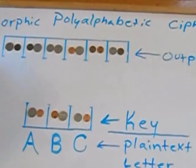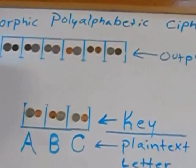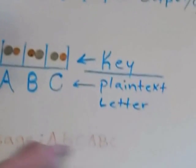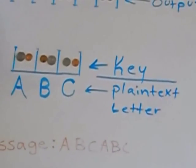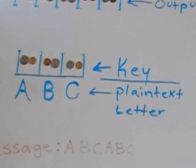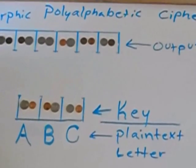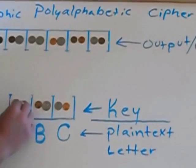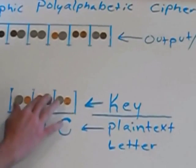And then this is our output of our message which was encrypted using the polymorphic polyalphabetic cipher. And this is the resulting key.